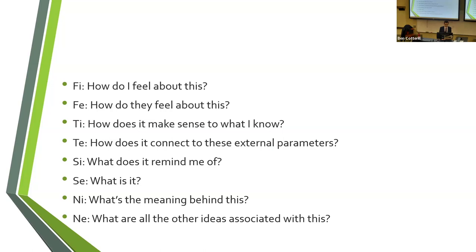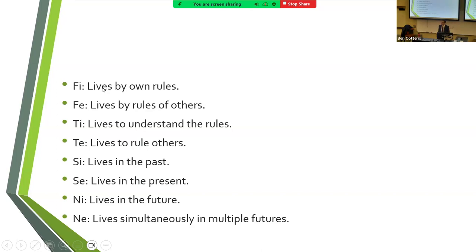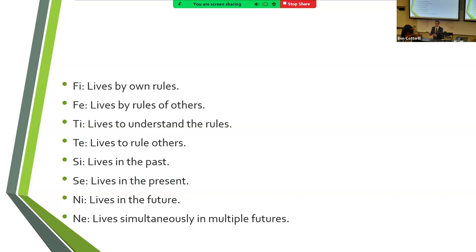To summarize with a mnemonic: introverted feeling lives by their own rules; extroverted feeling lives by the rules of others; introverted thinking lives to understand the rules; extroverted thinking lives to rule others; introverted sensing lives in the past; extroverted sensing lives in the present; introverted intuition lives in the future; extroverted intuition lives simultaneously in multiple futures. Extroverted intuitive types don't like to be boxed in — they like to have options and multiple possibilities.